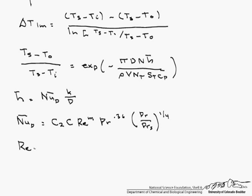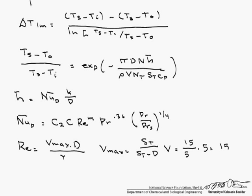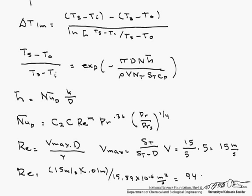Let's calculate our Reynolds number, which is based on V_max times D divided by kinematic viscosity. The maximum velocity is the pitch in the transverse direction divided by (the pitch in the transverse direction minus the diameter), times the inlet velocity, giving V_max equal to 15 meters per second. So our Reynolds number is 15 m/s times 0.01 m divided by 15.89 × 10⁻⁶ m²/s, giving a Reynolds number of 9,494.